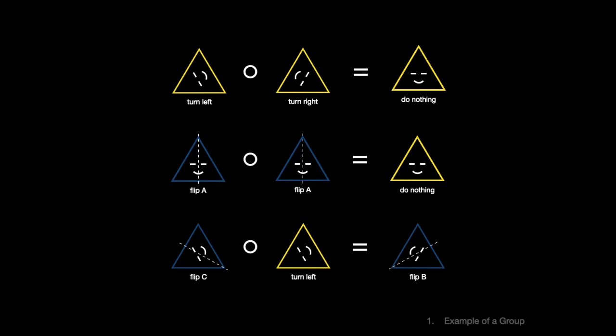I want to clarify a potential source of confusion that tripped me up when I started on this journey. The members of a group are called elements, and there are many kinds of groups, so there are many kinds of elements. In some groups, the elements are numbers. In some, they're matrices. The elements of this particular group are not objects, but actions. And these actions are called symmetries.